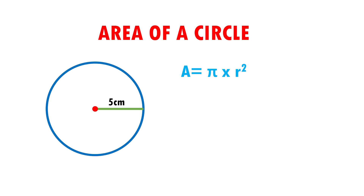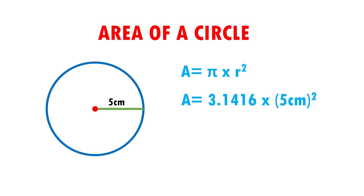Now, I am going to substitute data. This means that instead of putting the letters, I am going to put their value. A equals pi, which is worth 3.1416, and the radius, in this case, is worth 5 centimeters. I raise it to the second power because the formula says radius squared.